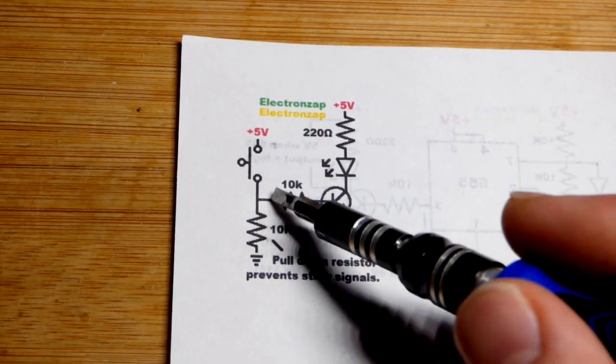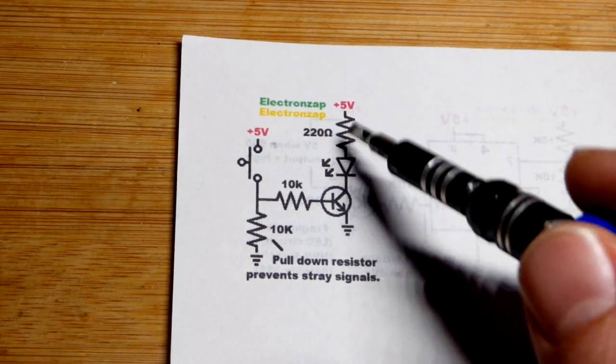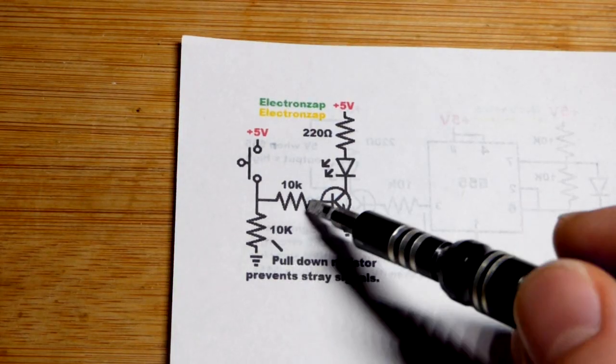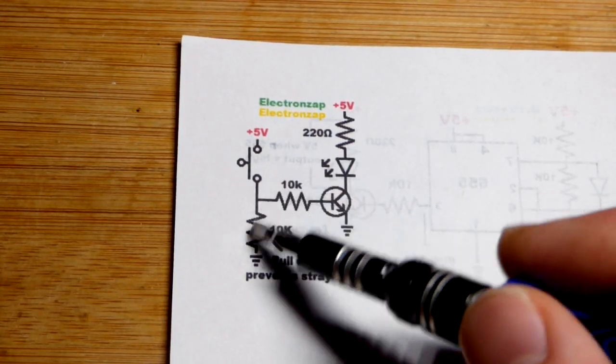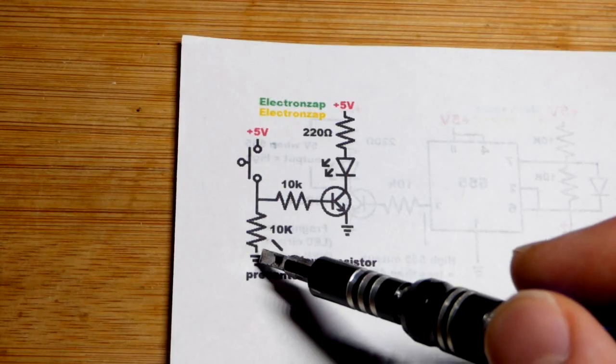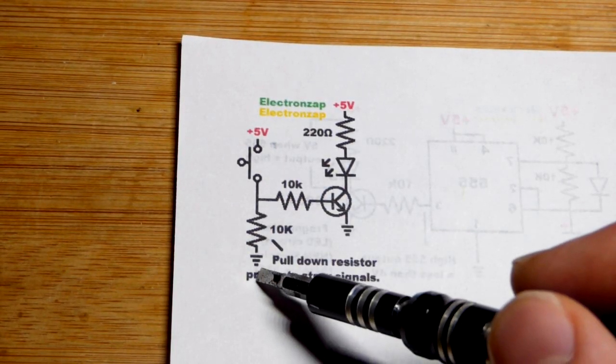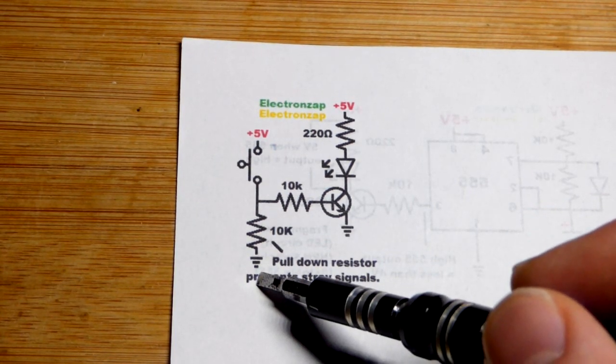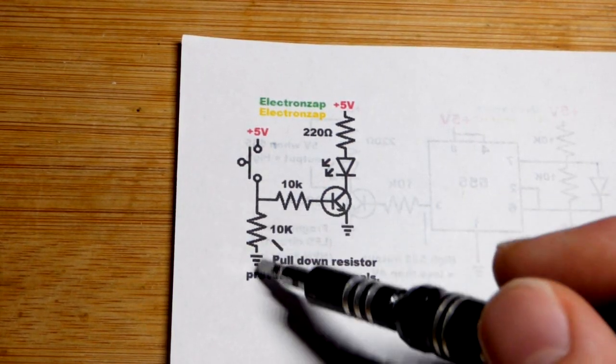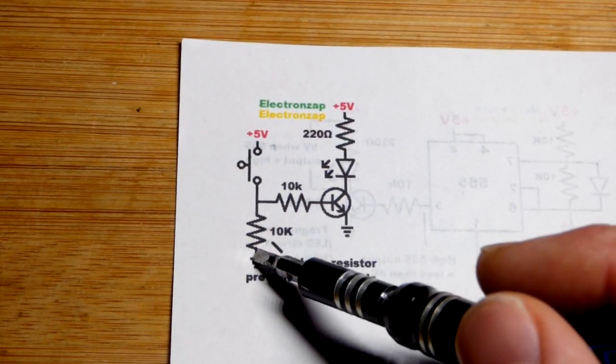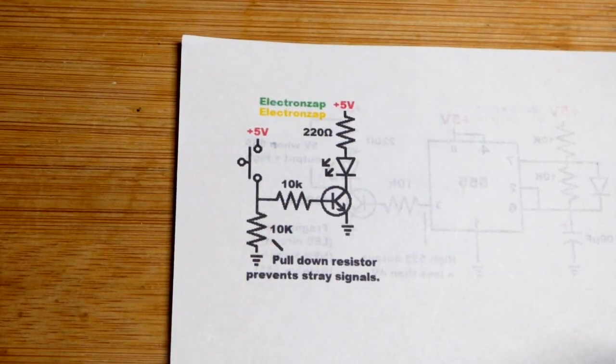But again, if you touch it, it might conduct a little bit. Maybe that will cause problems. So what a pull-down resistor will do is make sure that even if you got stray signals and stuff, they probably will not be able to get any current flow because you got that connection to ground. It will overpower it. So that's one way you can use a pull-down resistor, making sure you got zero volts at the base even if you got stray signals.